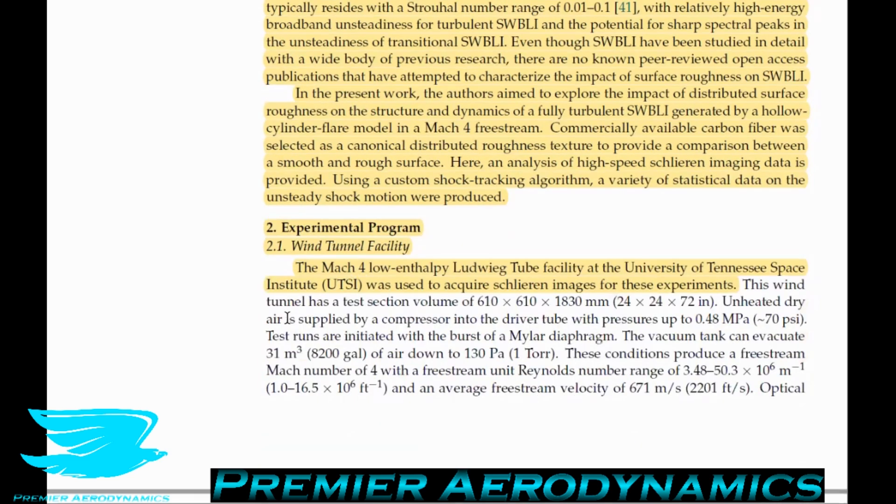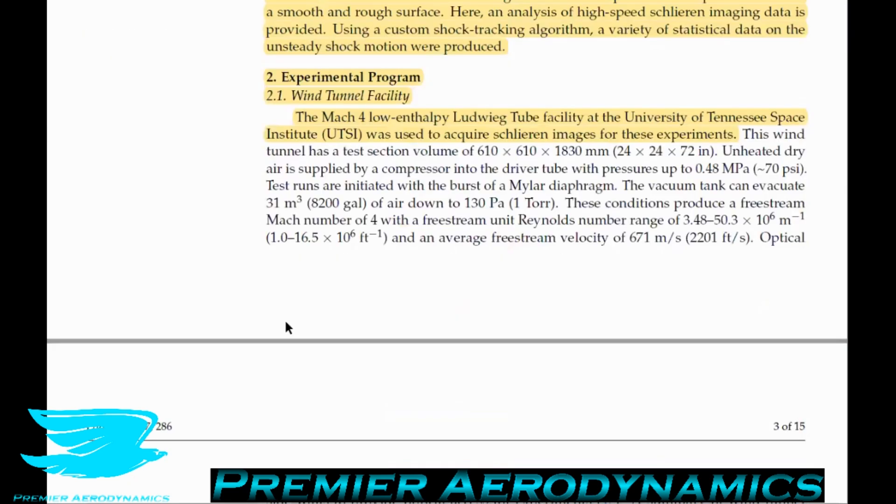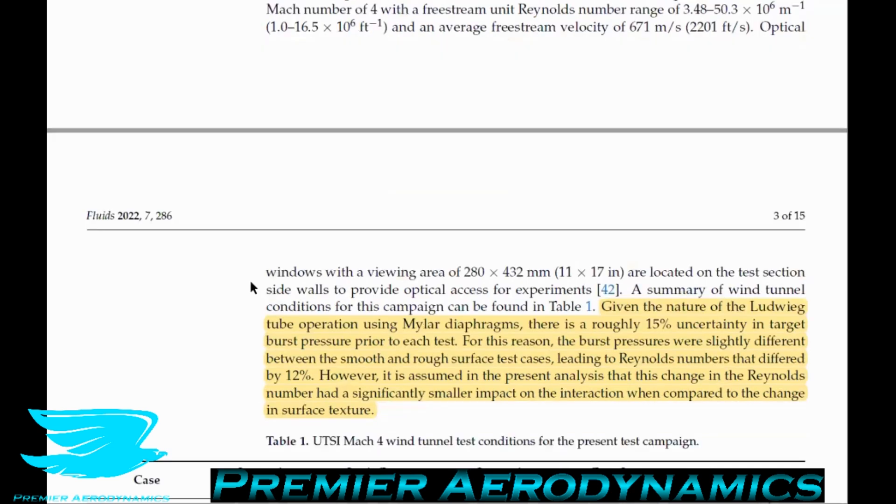Let's talk about the experimental facility. The Mach 4 Low-Enthalpy Ludwig tube facility at the University of Tennessee was used to acquire Schlieren images for this experiment. So what is a Ludwig tunnel? A Ludwig tunnel is very simple. It's a very easy way of producing a supersonic flow. All it is is a wind tunnel, and then upstream you have this tank. And you pressurize this tank to really high pressures. And then this tank has an opening, obviously, where it connects to the rest of the tunnel, and it has this membrane. Then you pierce the membrane once you get to a certain pressure. Often this is done automatically. Once it hits a certain pressure, it will do it automatically. Other times you can do it yourself.